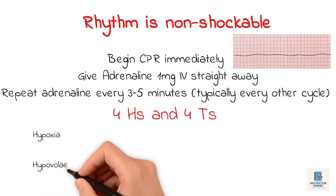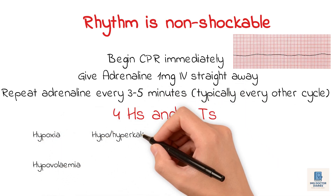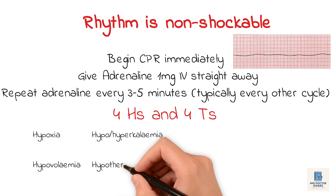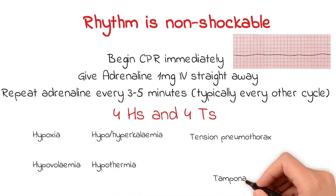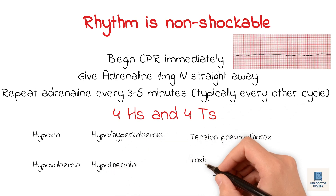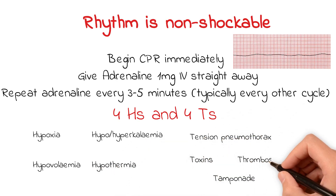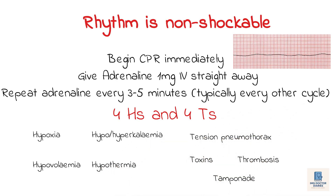The 4 H's are: hypoxia, hypovolemia, hypo- or hyperkalemia, and hypothermia. The 4 T's are: tension pneumothorax, tamponade, toxins, and thrombosis — either MI or PE.